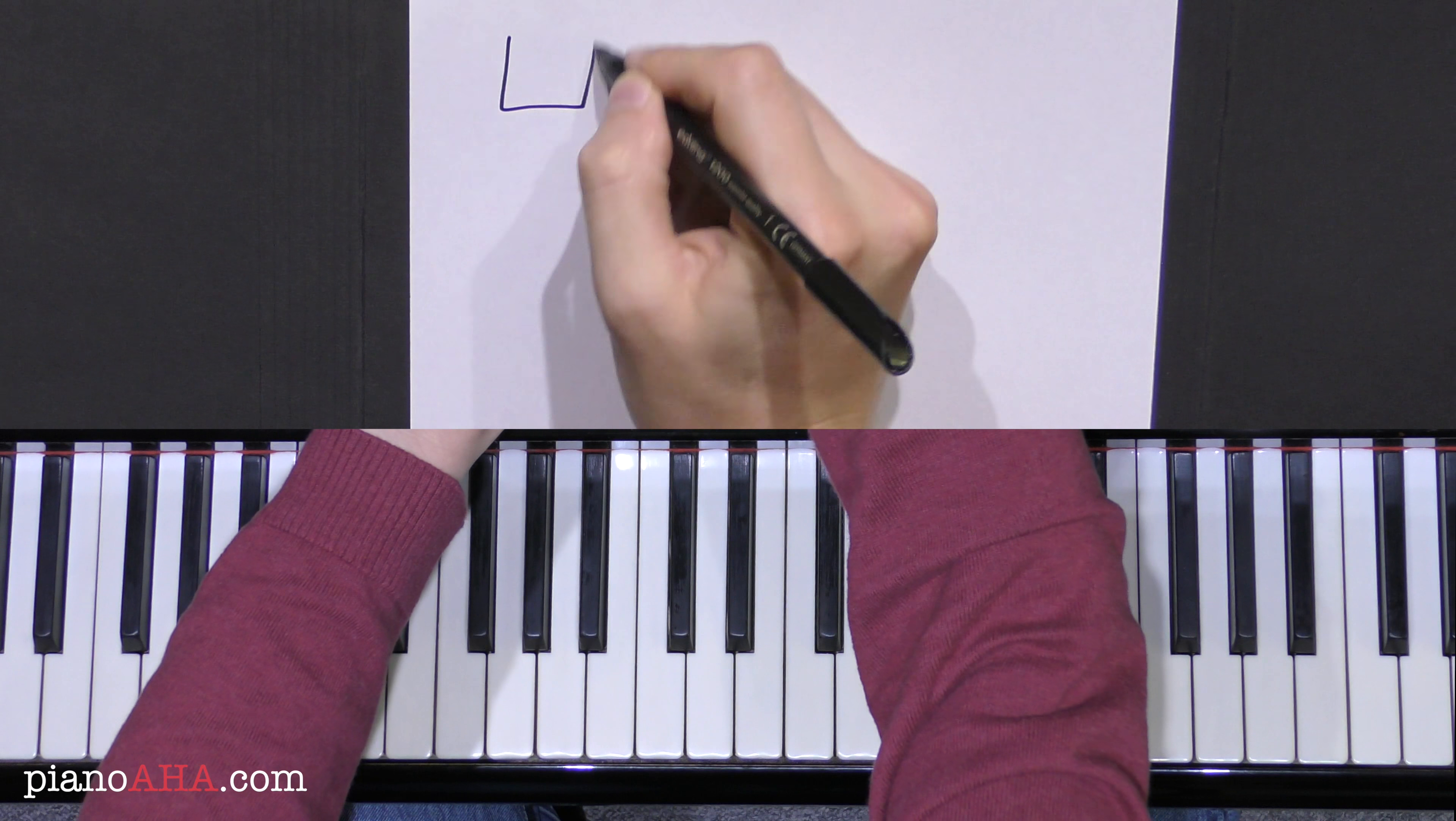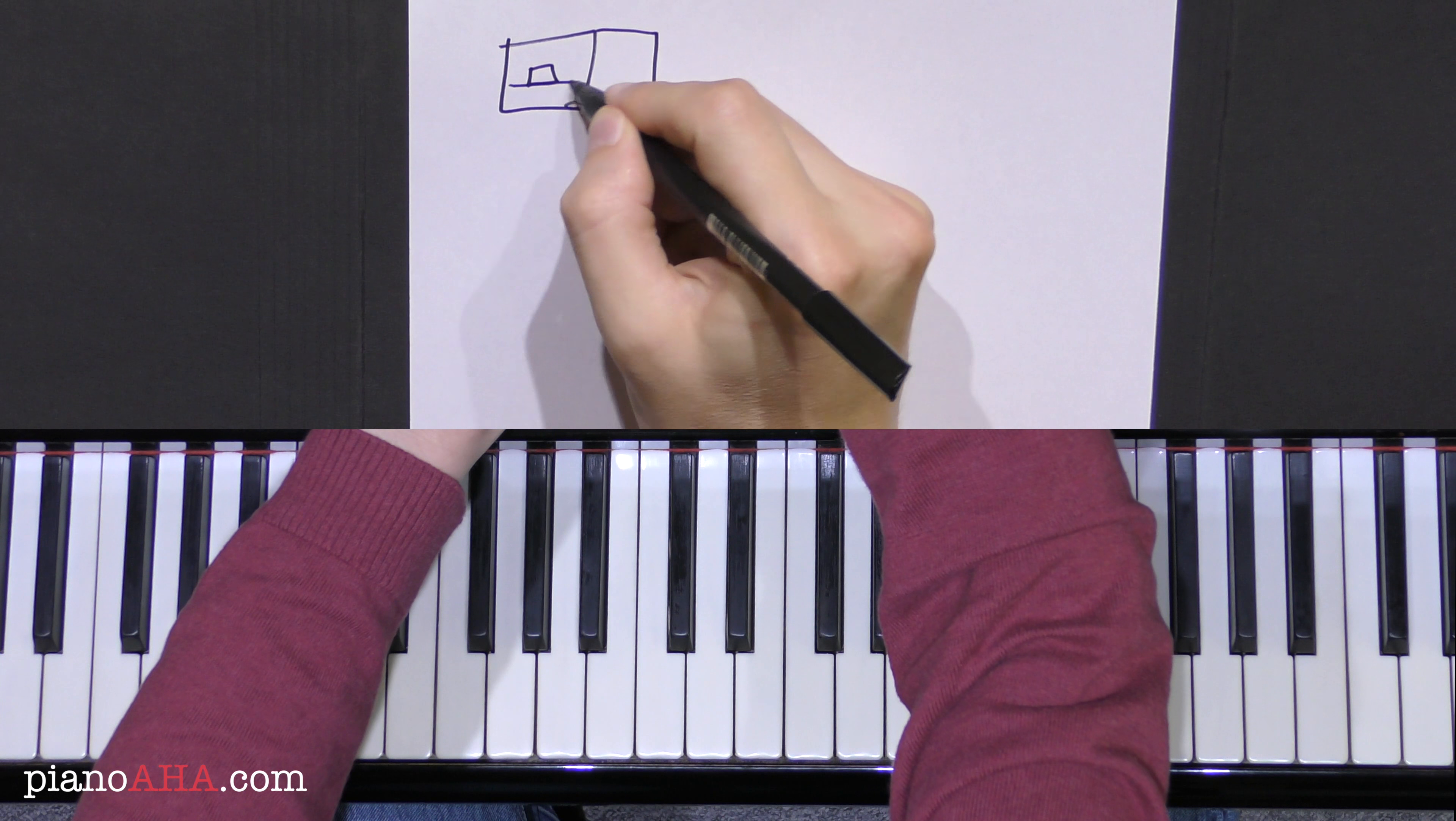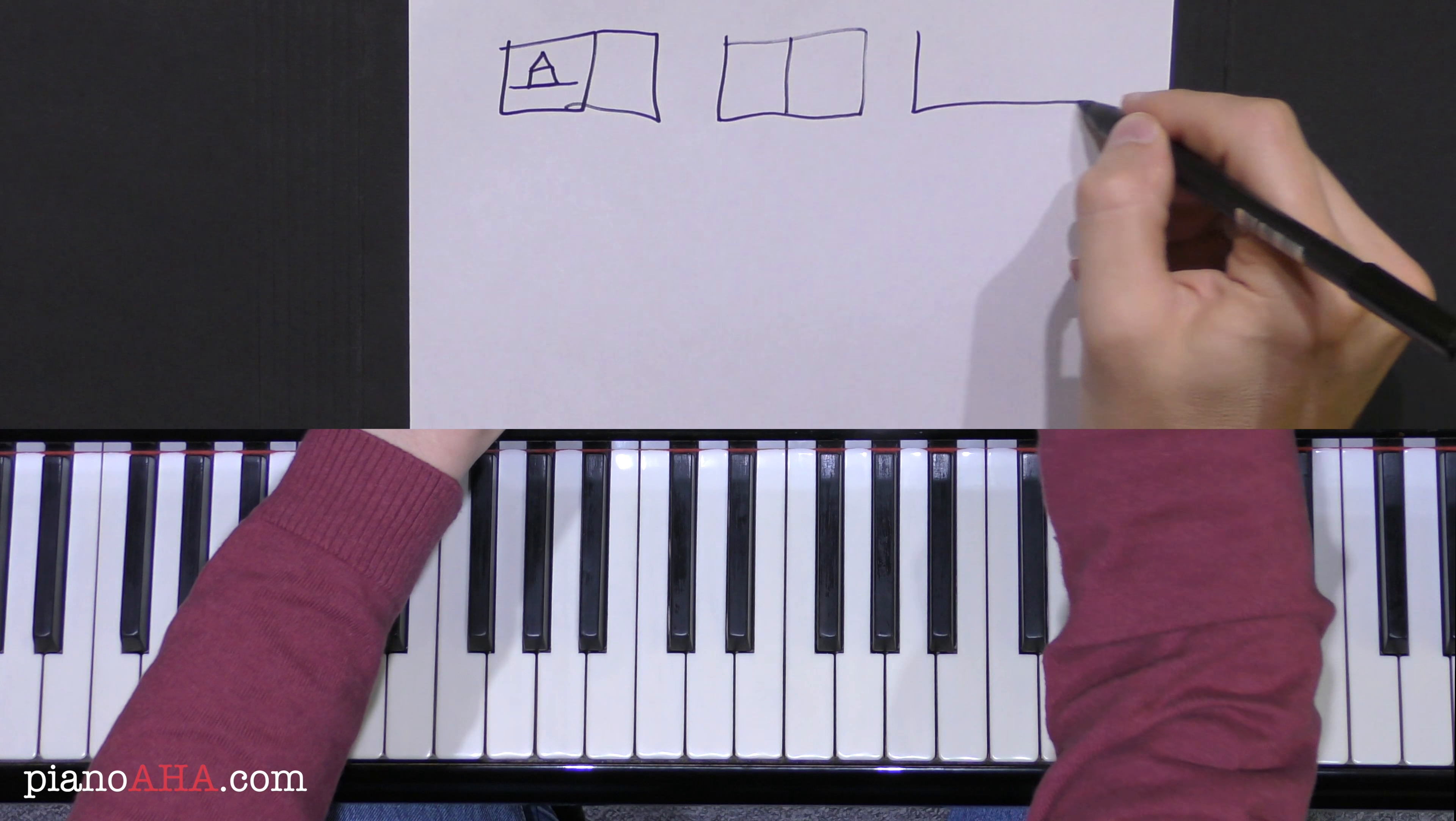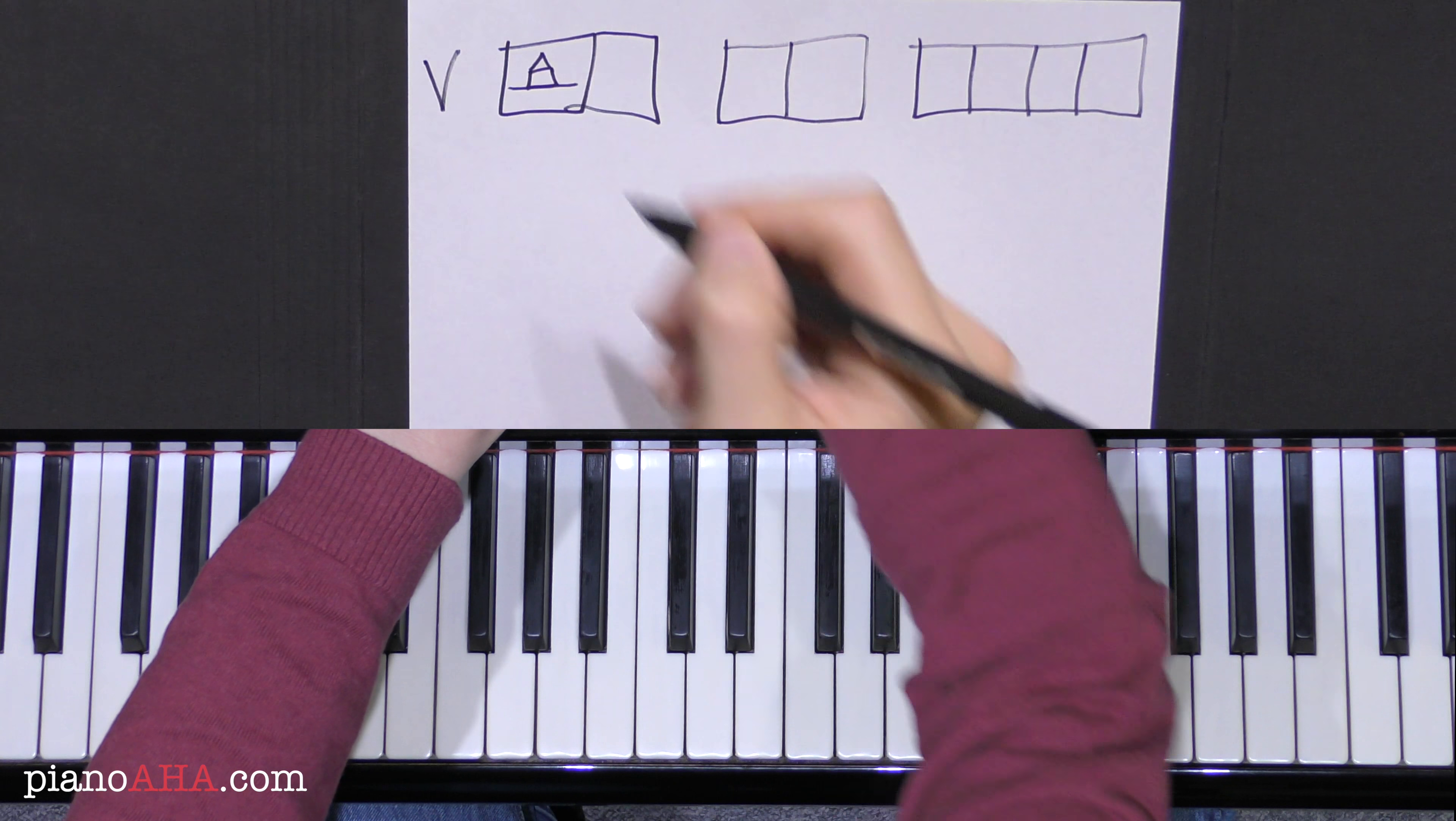So we have a first group. Just say that this is our home bass. And we have a second group here. And we have a third group. These are all the chords to the verse in Hotel California. This is the verse that we've just done.